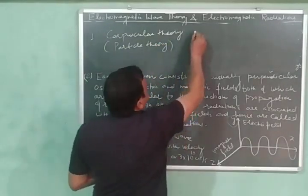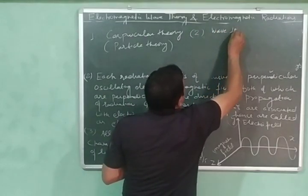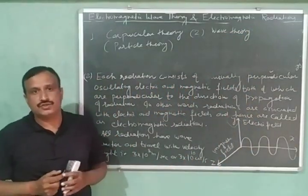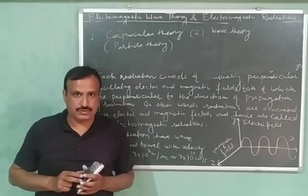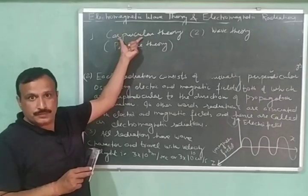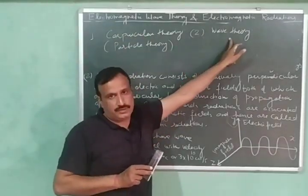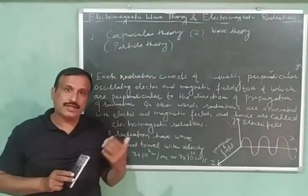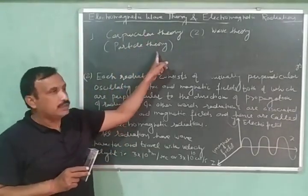And second theory is wave theory. And none of these theories can explain all the properties of electromagnetic radiations. Some properties are explained on the basis of corpuscular theory. And some properties are explained on the basis of the wave theory.